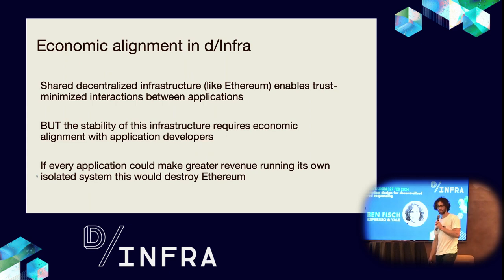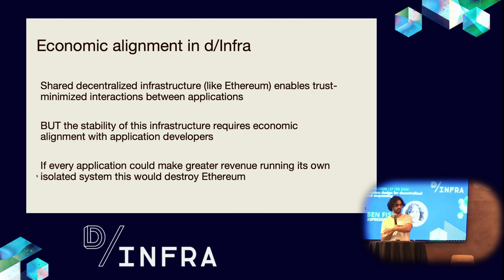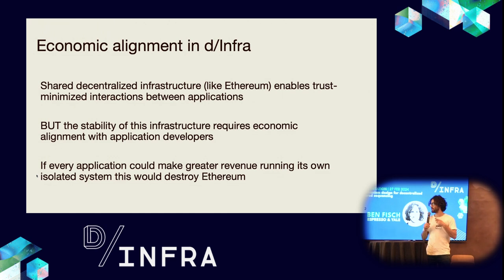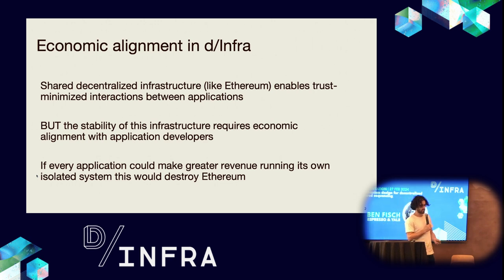The connection to this de-infra conference: this is broadly about economic alignment in decentralized infrastructure. Shared decentralized infrastructure like Ethereum enables trust-minimized interactions between applications, but the stability of this infrastructure requires economic alignment with application developers. If every application could make greater revenue by running its own isolated system, then that would destroy the stability of Ethereum.